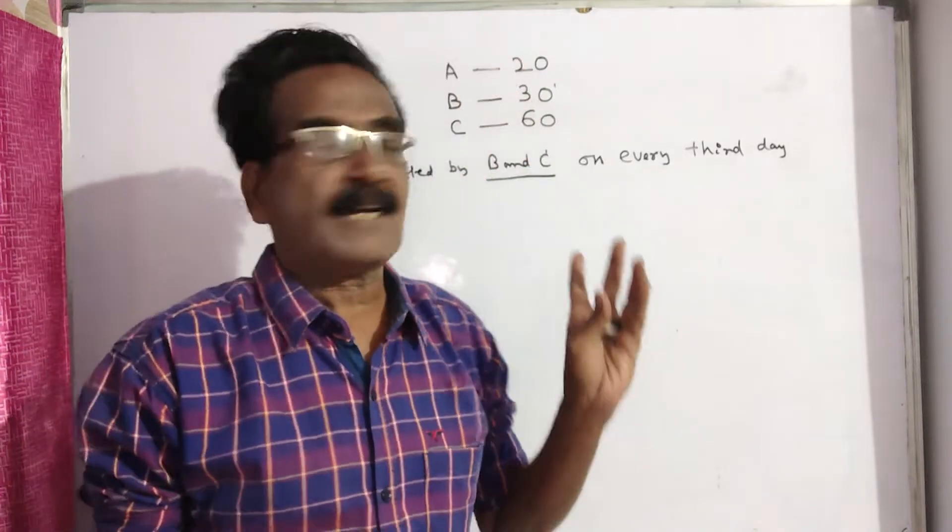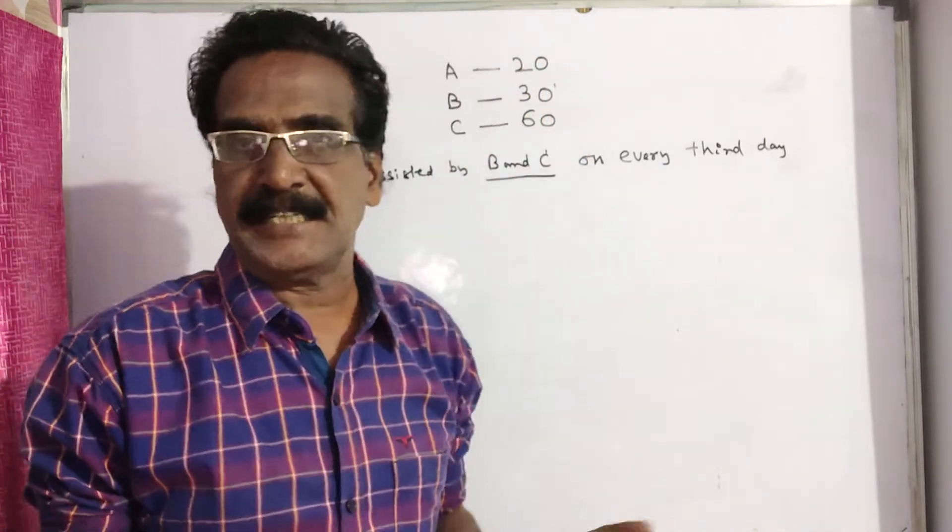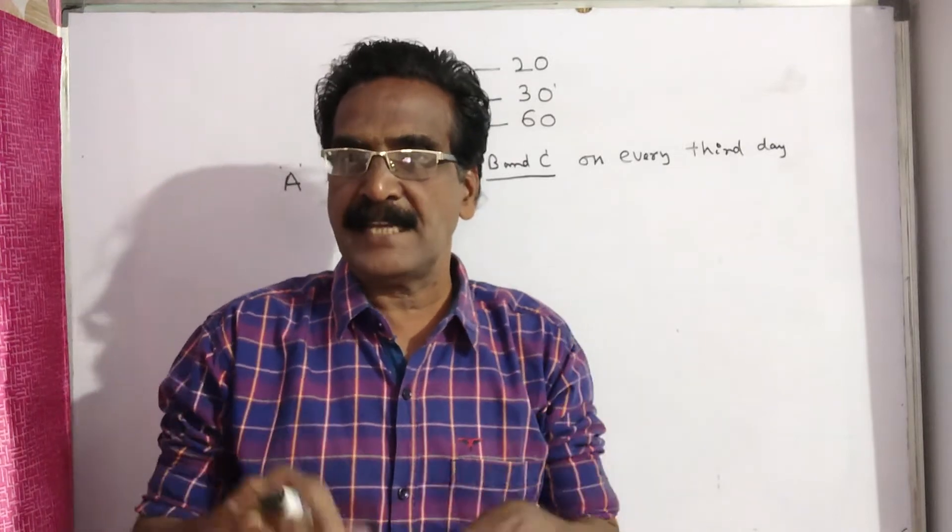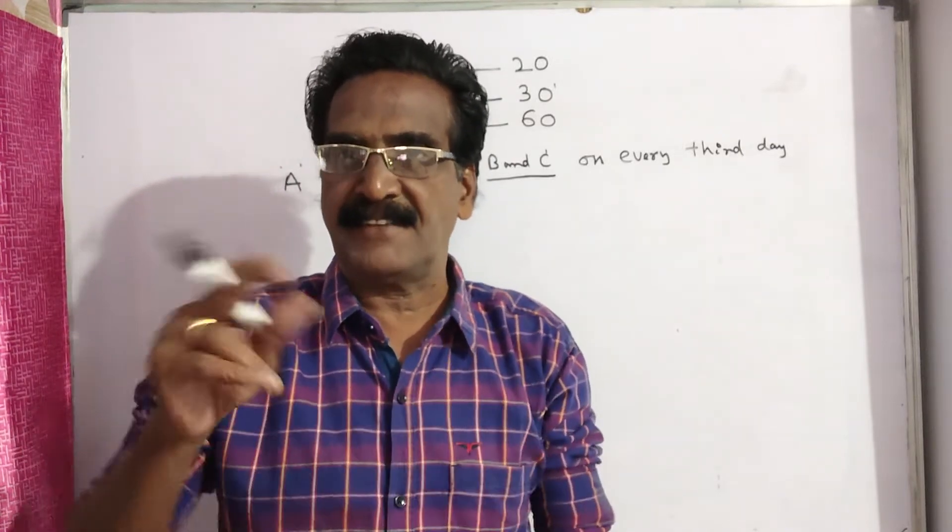A, B, C can do a piece of work in 20, 30 and 60 days. In how many days can A complete the work if A is assisted by B and C on every third day.